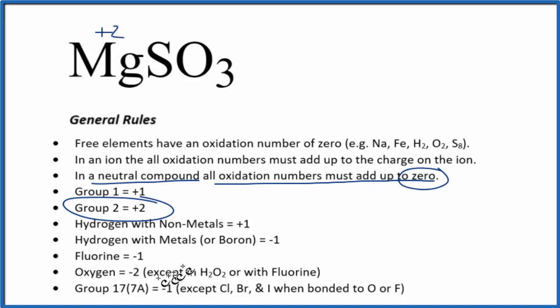We don't see sulfur on our list here, but we do see that oxygen is minus 2, with a few exceptions. So each one of these oxygen atoms is going to be minus 2.